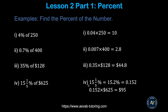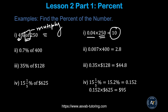Now we'll find the percent of a number. For example: four percent of 250. The keyword 'of' means multiply. Convert the percent to a decimal first by moving two decimal places, so four percent becomes 0.04. Then multiply: 0.04 times 250 gives you 10.